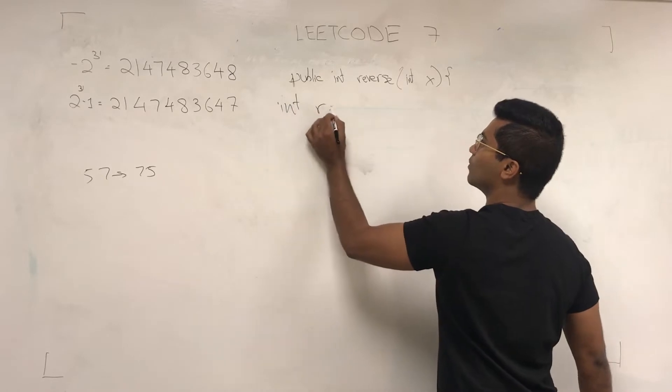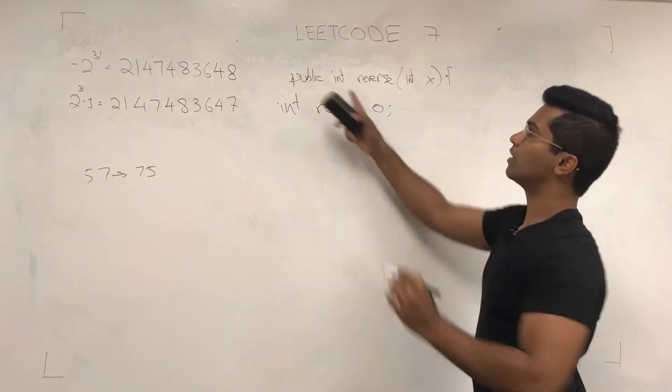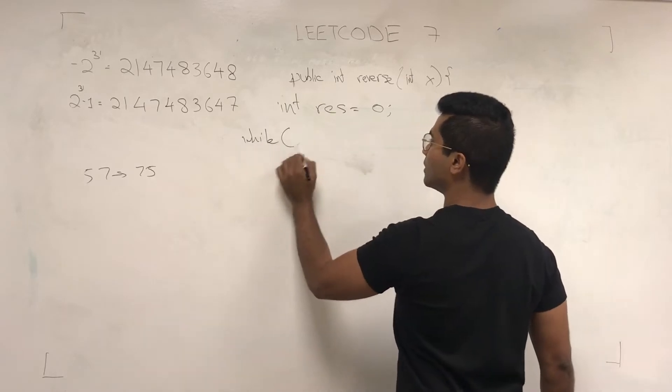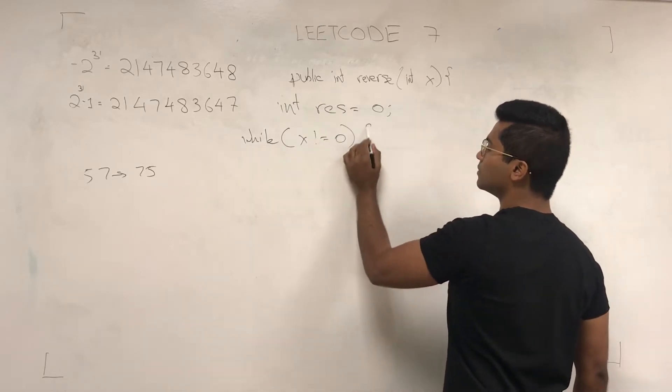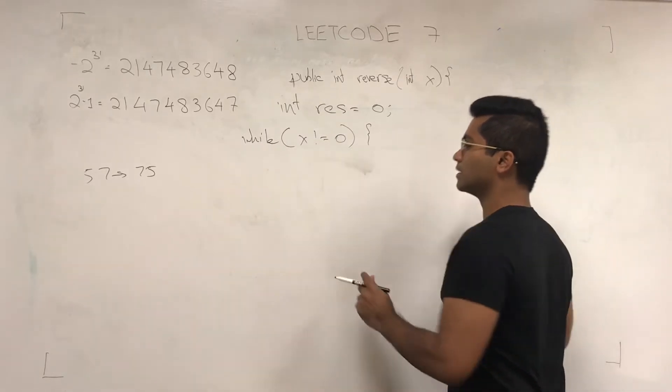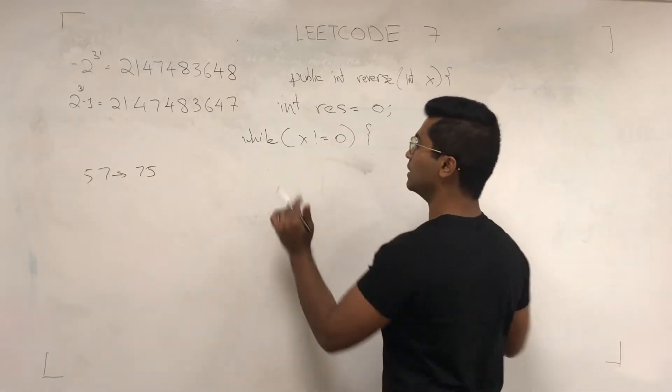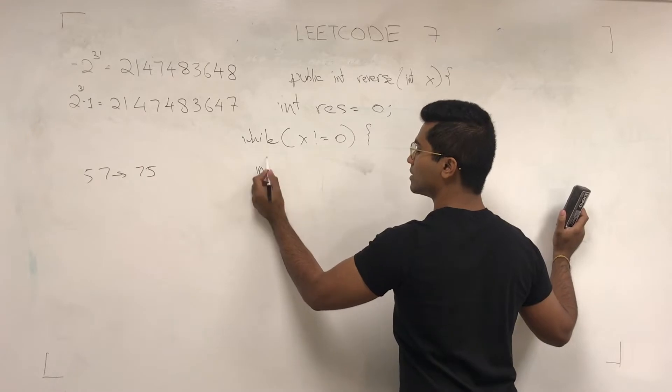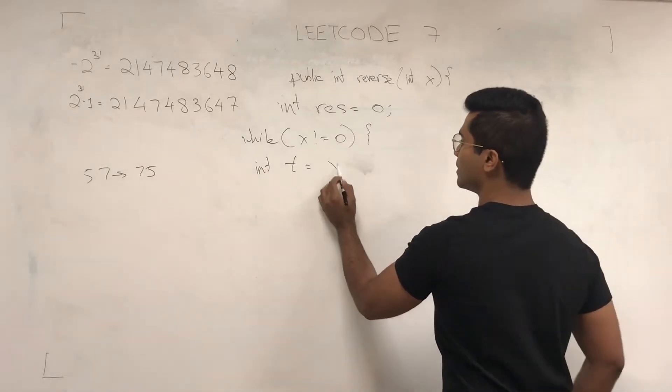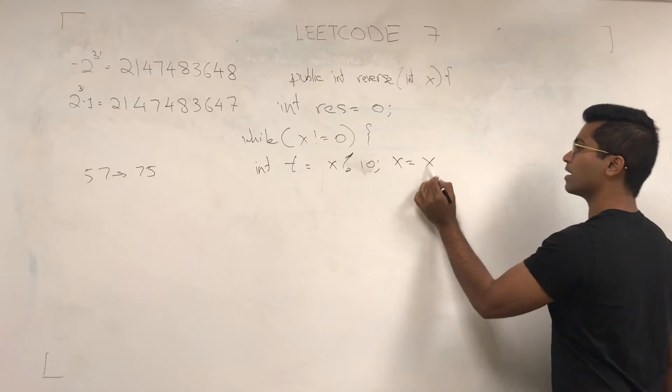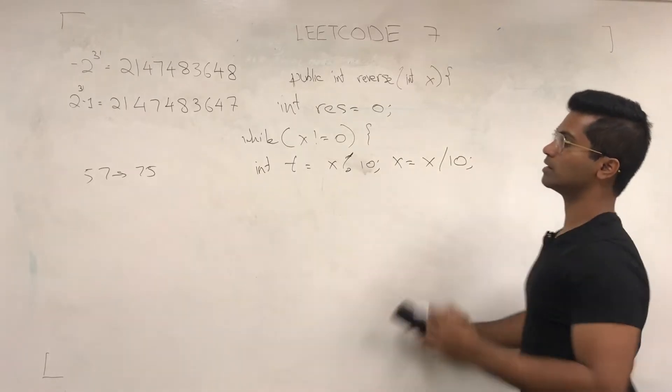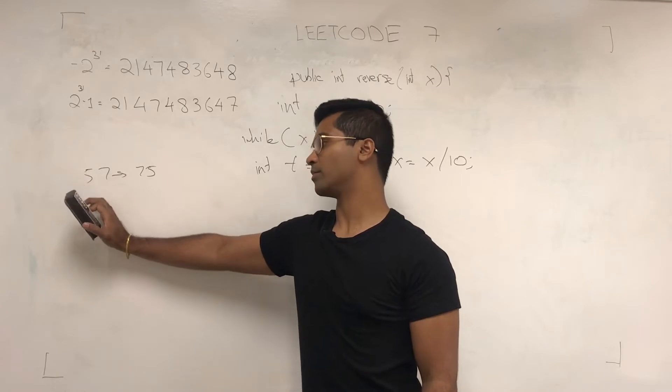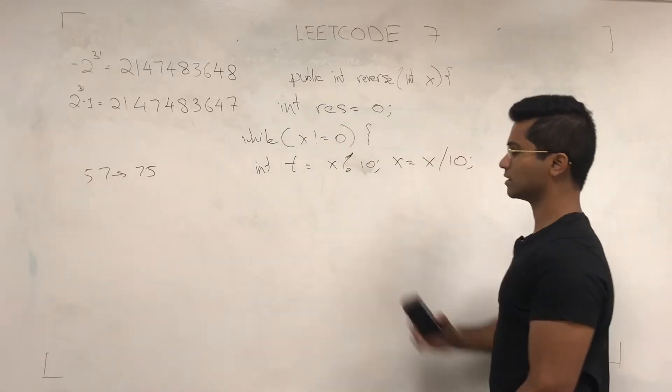So int res = 0. They want an integer, so this is what we declare first. Then while x is not equal to 0, this one is going to be what we operate on. We want to get the edge first, so it's going to be int t for temp = x mod 10, and then we decrement x every time by 10. So first we're holding 7, and then we divide 57 by 10 and we get 5. So that's what x is going to become.